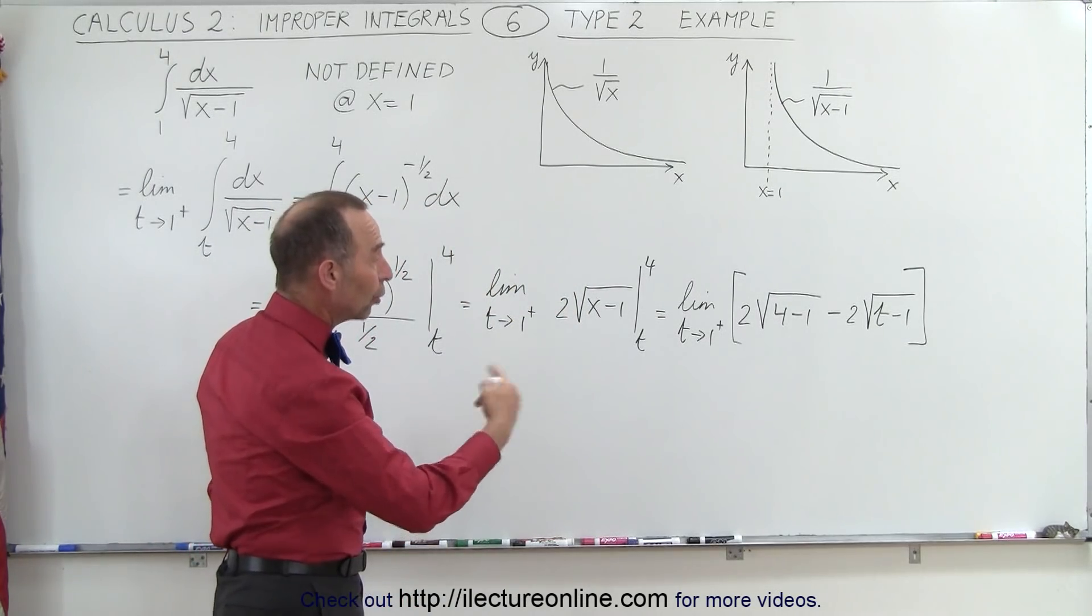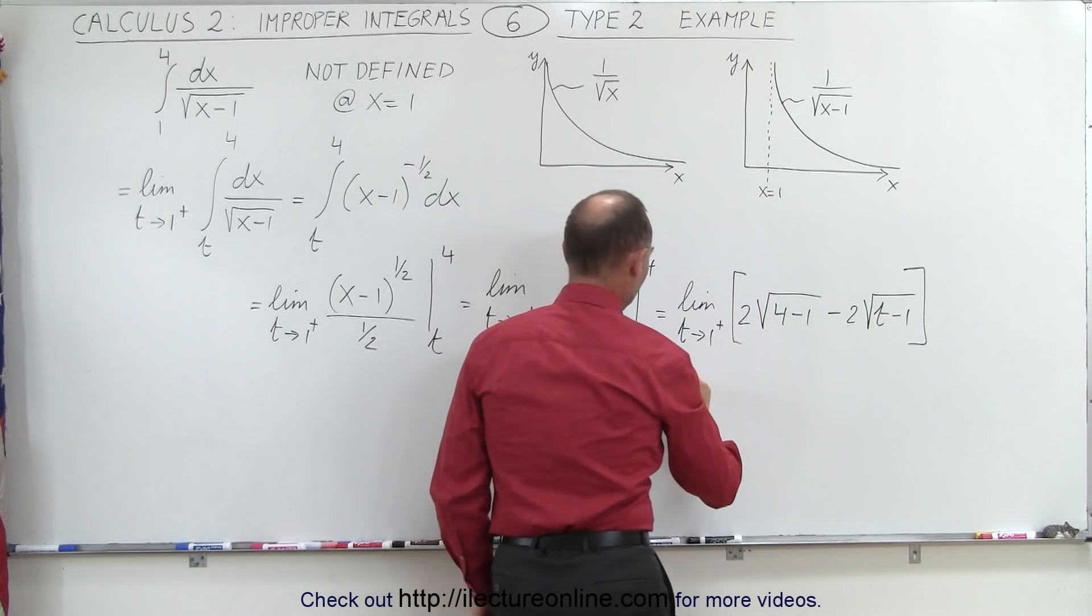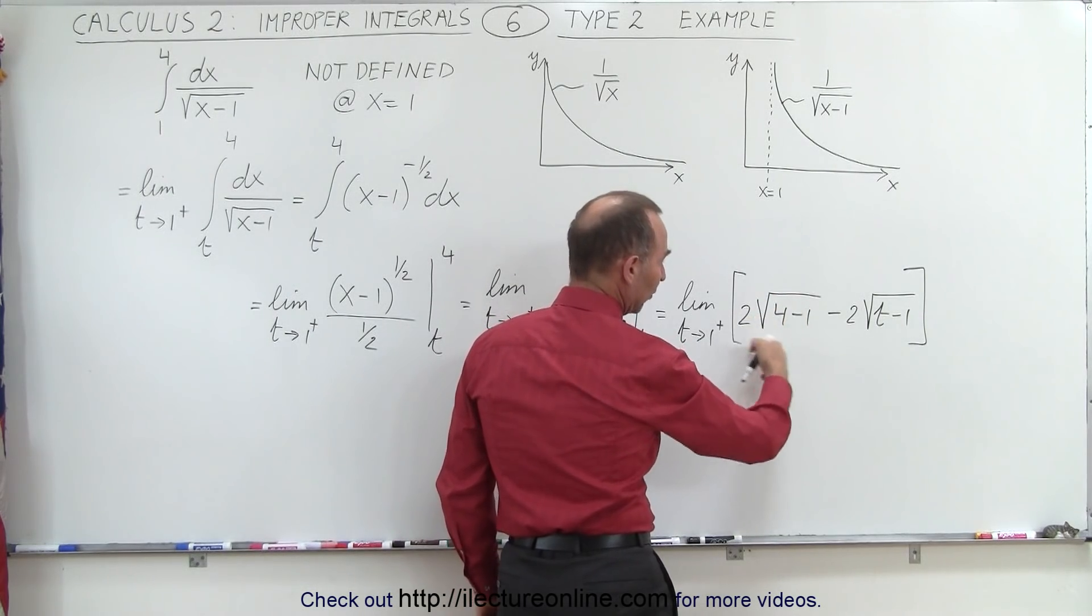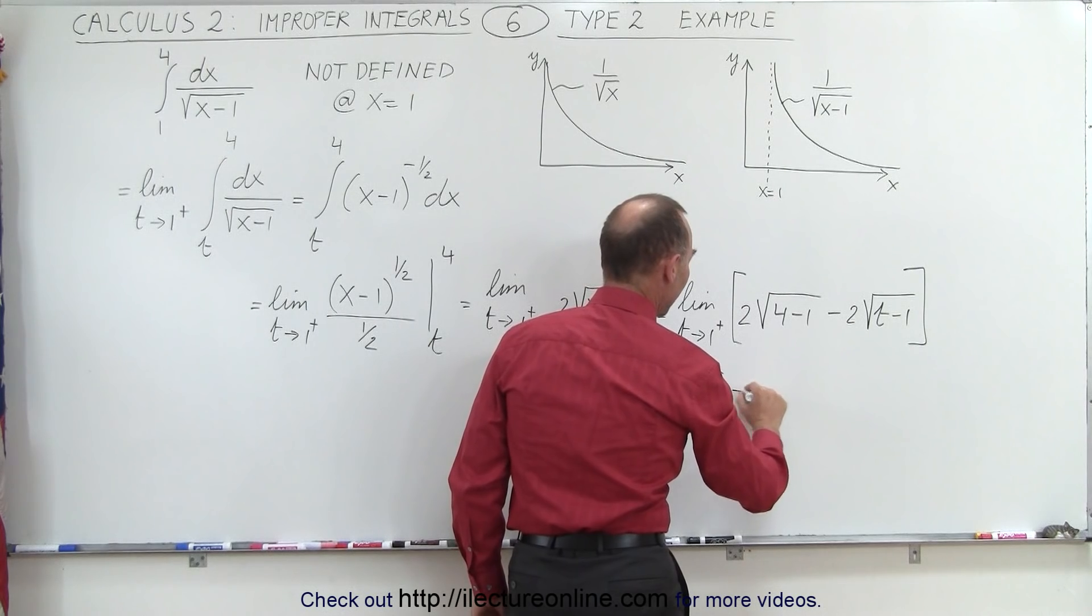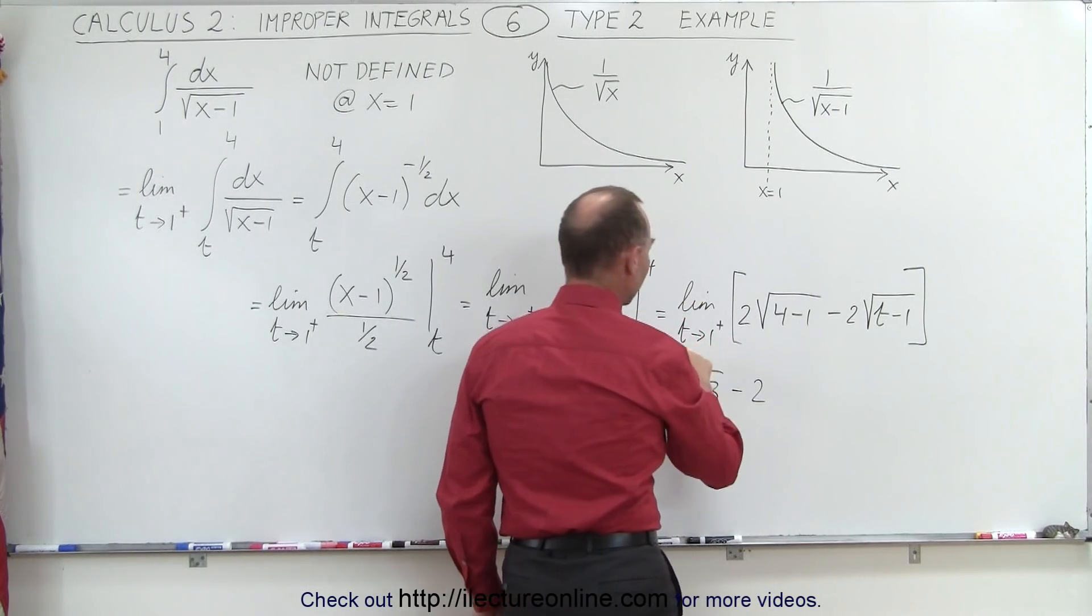Now we can go ahead and allow t to go to the limit to see what we end up with. So this becomes equal to, now this is of course not affected, this becomes 2 times the square root of 3 minus 2 times, and instead of writing t,